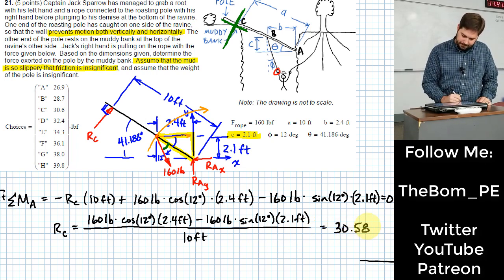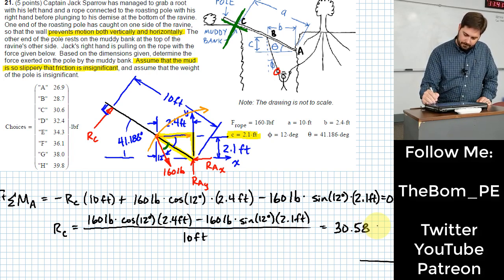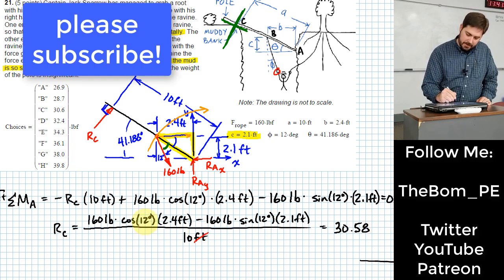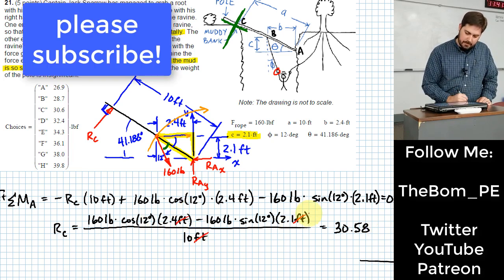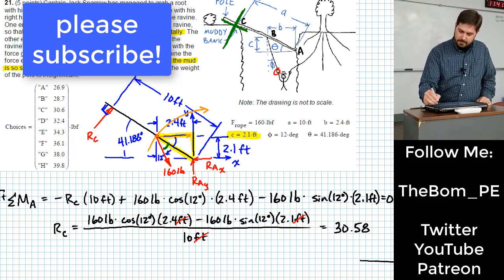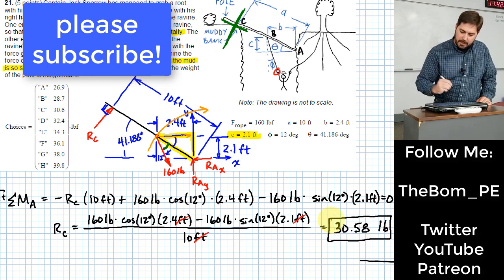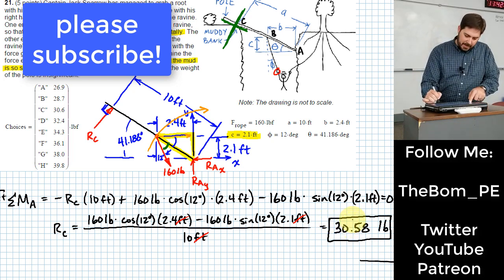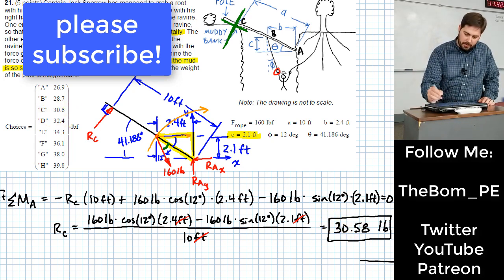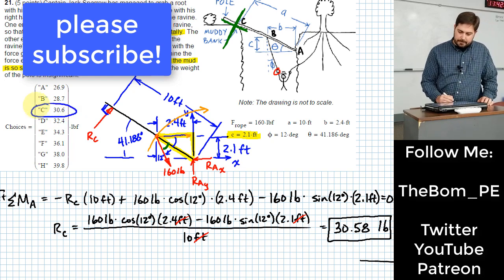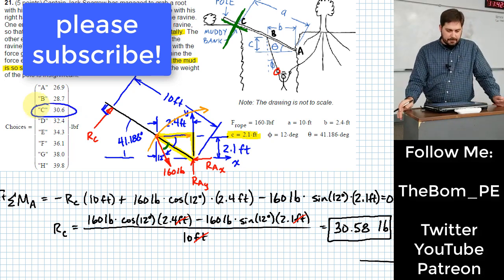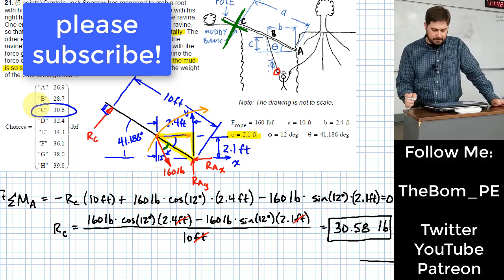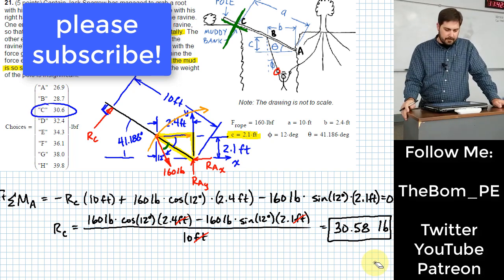Units. Notice here feet cancels feet. So what kind of units do I have left? Pounds. Which is good because it's asking for a force. I wouldn't want that to end up in feet. So 30.58. Here we got 30.6 as one of the choices. All right. Let's go.